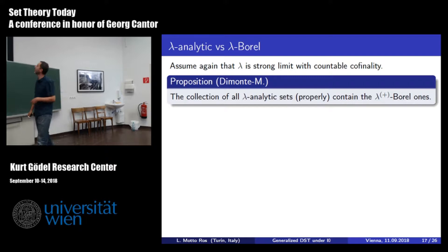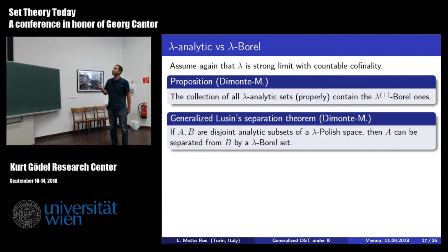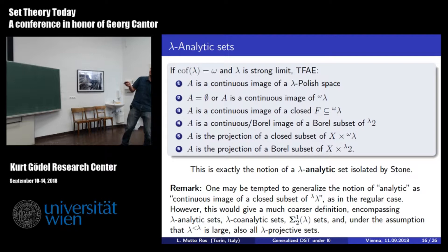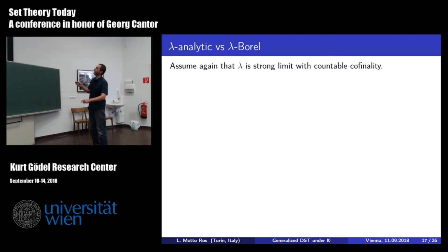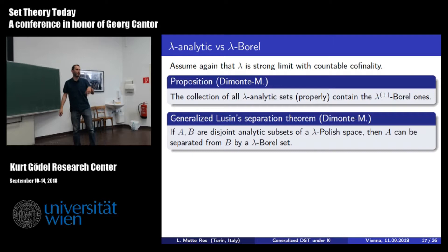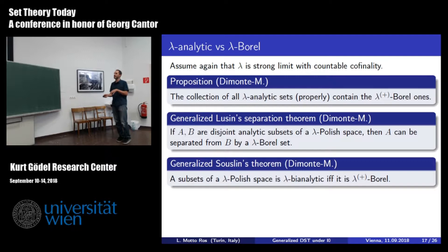Stone's definition is the correct one, because you recover: lambda-analytic sets contain all lambda-plus Borel sets; they are closed under unions of size lambda, intersections of size lambda, and so on. Moreover, with the very same proof as in the classical case, you recover the Luzin separation theorem—the possibility of separating two disjoint analytic sets by a Borel set—and the fact that co-analytic lambda-analytic sets are Borel. This is all analogous to the classical case with lambda in place of omega. Remember this is false if you work with regular cardinals, so Mirna was a little bit right: you get a better picture with singular cardinals.